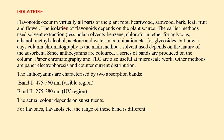Isolation: Flavonoids occur in virtually all parts of the plant — root, heartwood, sap, bark, leaf, fruit, and flower. The isolation of flavonoids depends on the plant source. Earlier, solvent extraction methods were used: for aglycones, less polar solvents like benzene, chloroform, and ethyl acetate were used, and for glycosides, ethanol, methanol, acetone with water in different combinations were used. Nowadays, column chromatography is the main method, where the column is made of alumina, silica gel, etc., and the solvent used depends on the nature of the adsorbent.